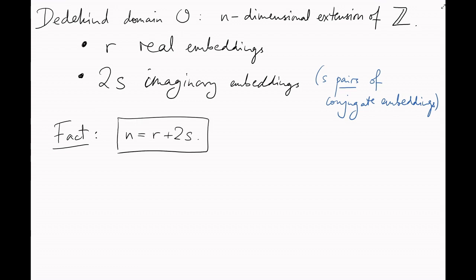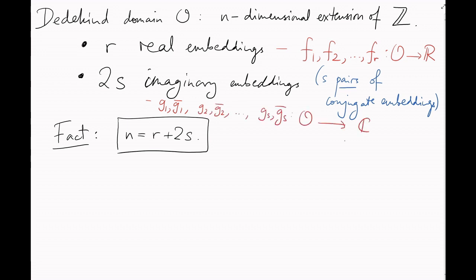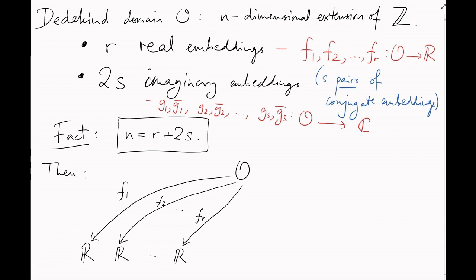Moreover, if we call the real embeddings F1 up to FR, and the conjugate pairs of imaginary embeddings G1, G1 bar, up to Gs, Gs bar, then we can form the composite embedding. F1 along one real axis, F2 along another, and so on up to FR. Then G1 into one copy of the complex plane, G2 into another, and so on up to Gs.